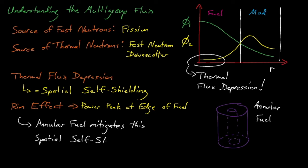Alternatively, we can also fill the center region with moderator, which creates a source of thermal neutrons inside of the fuel and overall improves the fuel's utilization of neutrons. Another example of self-shielding comes in the form of the rim effect, where high cross-section neutrons, such as thermal and resonance energy neutrons, are absorbed in the first few millimeters of the fuel, which creates a power spike at the edge of the fuel. Often in reactors, this rim effect causes fuel to be depleted at a much quicker rate at the very edge of the fuel.